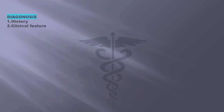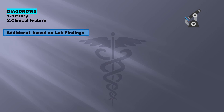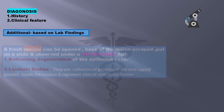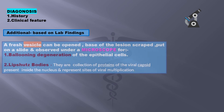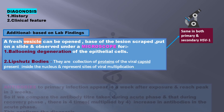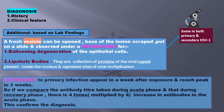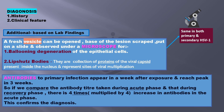Diagnosis can be done with just the history and clinical features. Additionally, microscopic examination can be done in a lab. A fresh vesicle can be opened, the base of the lesion scraped, put on a slide and observed under a microscope. The slide shows ballooning degeneration of the epithelial cells and Lipschütz bodies, which are collections of proteins of the viral capsid and represent the site of viral multiplication. These two features are present in both primary and secondary infection. Antibodies to primary infection appear within a week after exposure and reach a peak in three weeks. Comparing the antibody titer during the acute phase and the recovery phase shows a four-fold increase in antibodies during the acute phase, which also helps confirm the diagnosis.